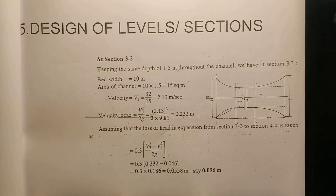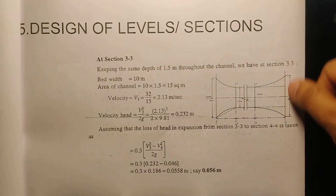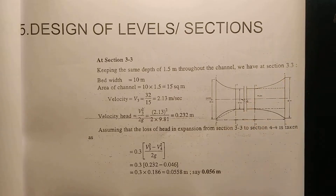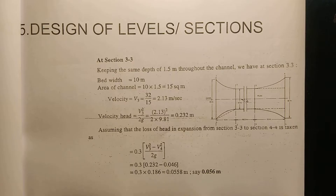Now we are going to section 3-3. If we are going to section 4-4, which is a trapezoidal shape, what shape is section 3-3? The shape of section 3-3 is a rectangle. We are going to shape the rectangle and find the area.